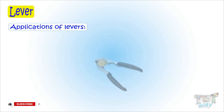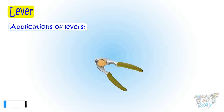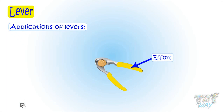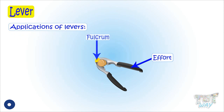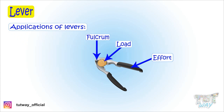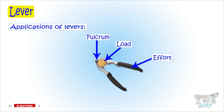Here we have a nutcracker. This is the point where we apply force, so this is the effort. This is the fixed part, or the fulcrum. And this is where the load is placed — the force we apply is used here. So we have effort, load, and fulcrum, making it a lever — but which type?